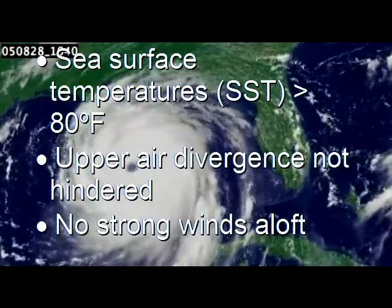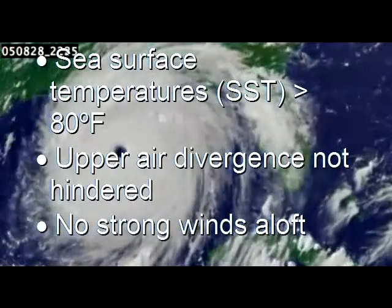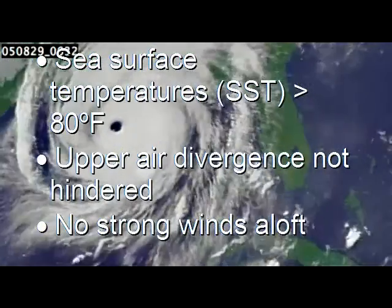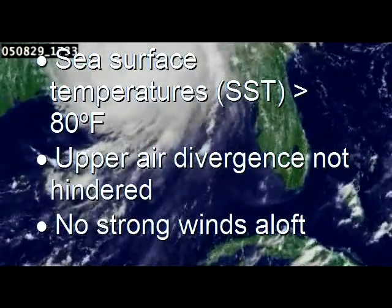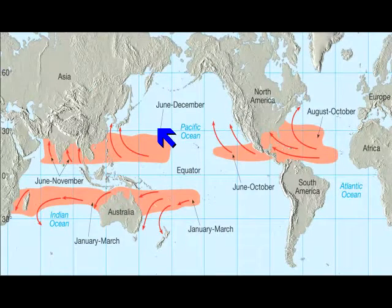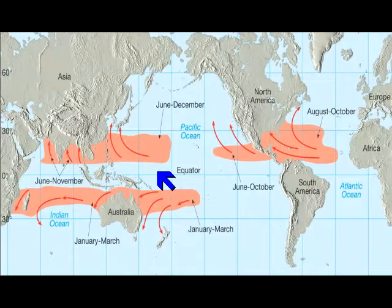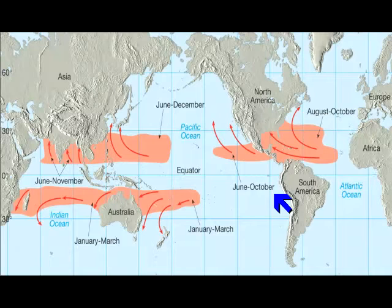Finally, there must not be any strong winds aloft, because they would disperse the latent heat released from the cloud tops, and we need that energy concentrated in a relatively small area. Poleward of about 20 degrees latitude, water temperatures are typically too cold. Equatorward of 5 degrees latitude, the Coriolis force is too weak, which is needed for the circulation. We also find that the eastward side of the oceans are often too stable, with trade wind inversions and relatively cool ocean surfaces — all of which prevent hurricane development.